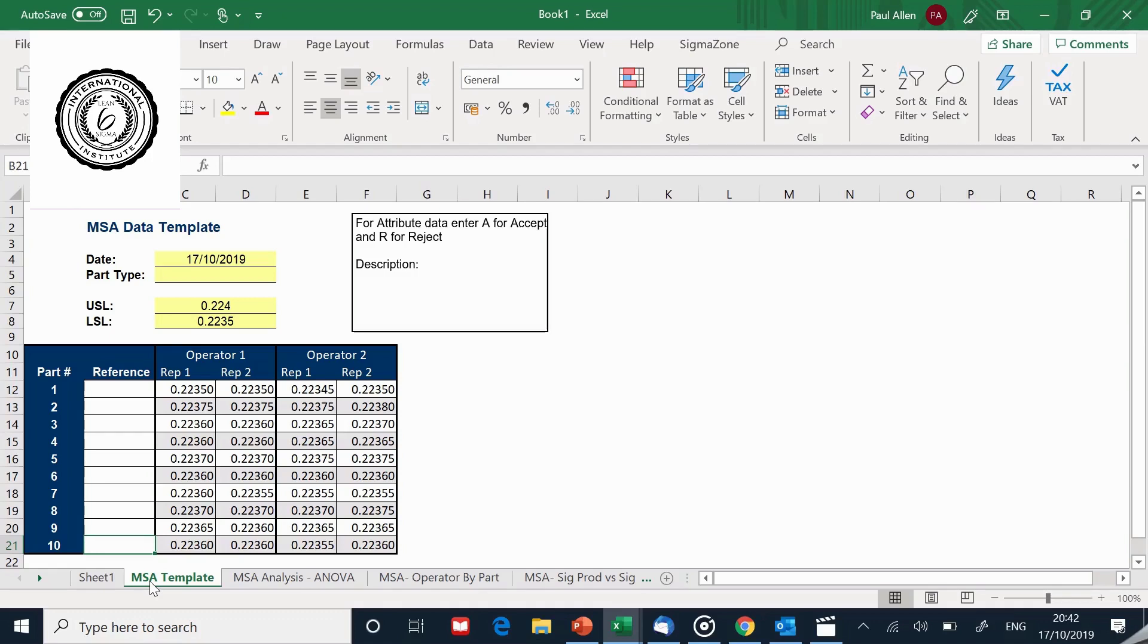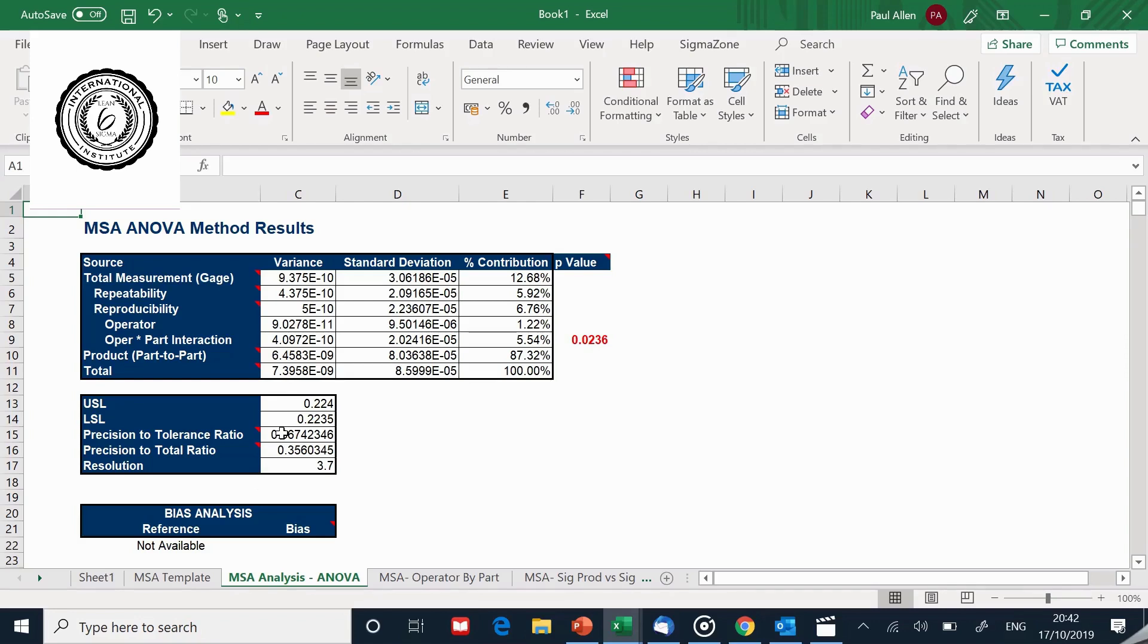So now what happens? Do we get much better? So now we've got precision to tolerance of 0.36, we've got precision to total of 0.35. So still based on our rules this would be a failing measurement system. Let's go back to the whiteboard and let's talk about what we are actually seeing in a high precision environment and whether what we are seeing is actually a poor measurement system or not.